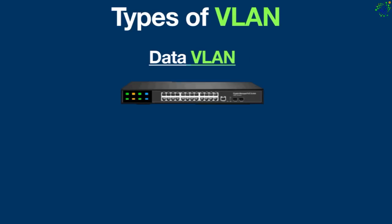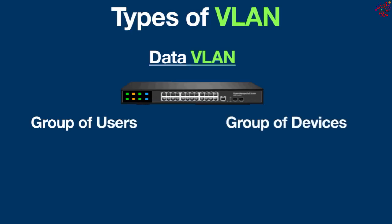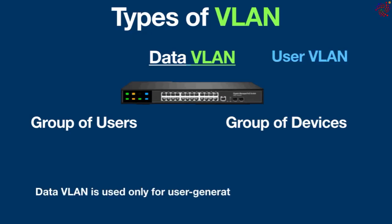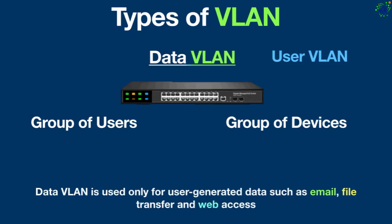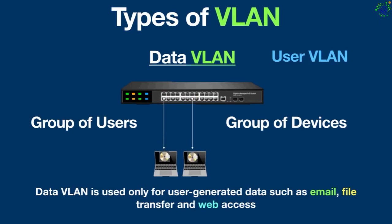Data VLAN is used to divide the whole network into two groups: one group of users and another group of devices. This VLAN is also known as User VLAN. Data VLAN is used only for user-generated data such as email, file transfer, and web access. This VLAN carries only data — it is not used for carrying management traffic or voice.